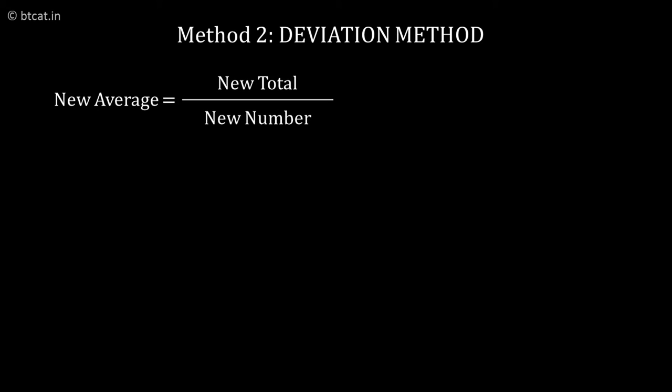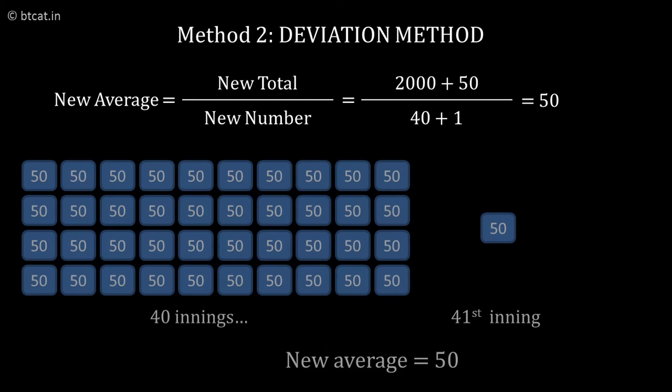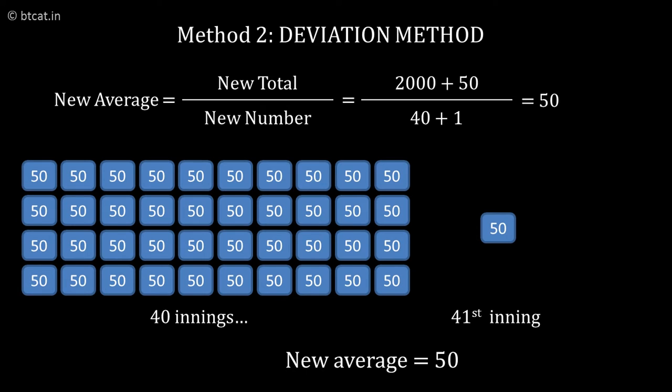One very good method which I would like to tell you is called the deviation method. You understand that if Sachin had scored exactly 50 runs, then the average would have remained the same. The average wouldn't have changed at all.